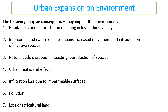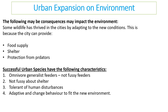The direct impact on habitat could be habitat loss or deforestation resulting in a loss of biodiversity. Interconnection with cities can drive invasive species into areas, causing problems for native wildlife. Natural cycle disruptions such as the hydrological cycle can impact reproduction of species. Urban heat islands may develop if not effectively planned, and infiltration is reduced because less permeable surfaces exist as we cover the soil in concrete, leading to increased pollution and loss of agricultural land, which means food prices could go up.